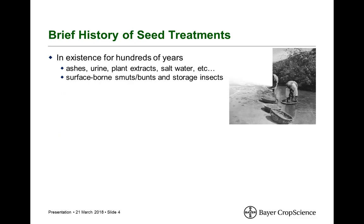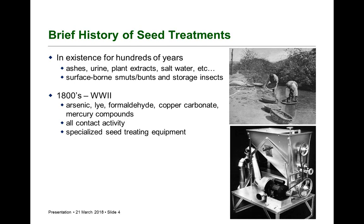A very brief history: the concept of seed treating has actually been around for hundreds of years. People took advantage of compounds immediately available to them — they weren't complex, they were quite crude. Mainly they were targeting surface-borne smuts and bunts in cereals and some storage insects. The application methods were equally primitive. Around the 1800s, compounds were manufactured specifically for use as a seed treatment, though human health and environmental safety was not high on the list of concerns. All of those early compounds had what we call contact activity.